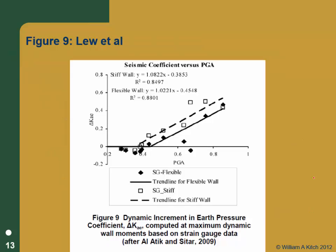Here's figure 9 from Lou et al. showing delta KAE — the additional earth pressure due to earthquake loading — versus PGA. The data points are from Sittar's centrifuge tests, so these are real data from good model tests. The solid line is for flexible walls and the dashed line is for stiff non-yielding walls. At 0.4G and below, there was no dynamic increment to earth pressures at all in the model tests. Above 0.4G, he gives fit lines to use.